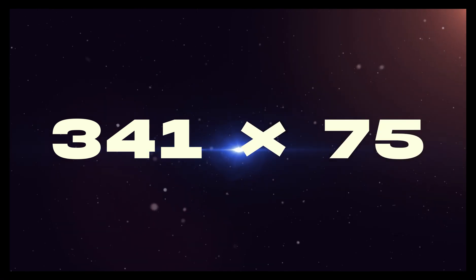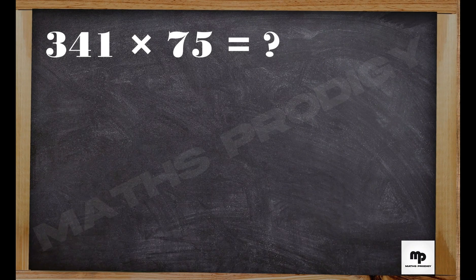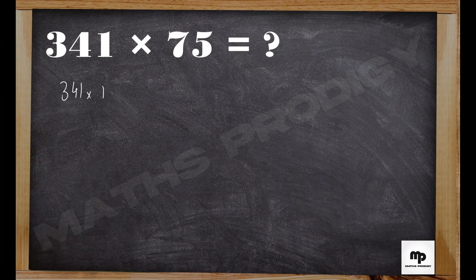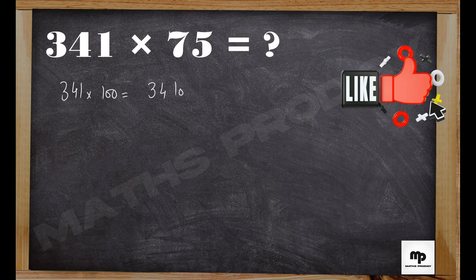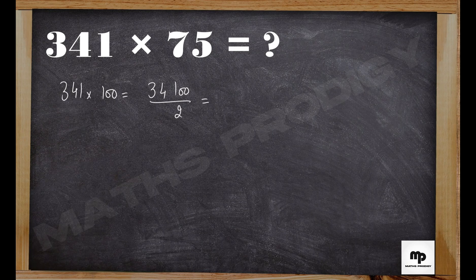For this method, multiply 341 by 100 which is 34,100. Find its half - finding half is easy mentally - that is 17,050.